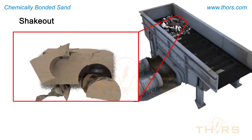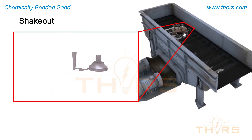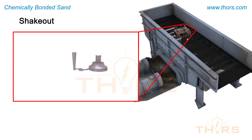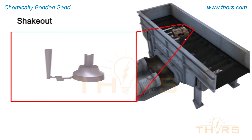Then, the casting is separated from the molding sand with the use of shake-out machines. The casting may be further cooled prior to cleaning and salvaging.